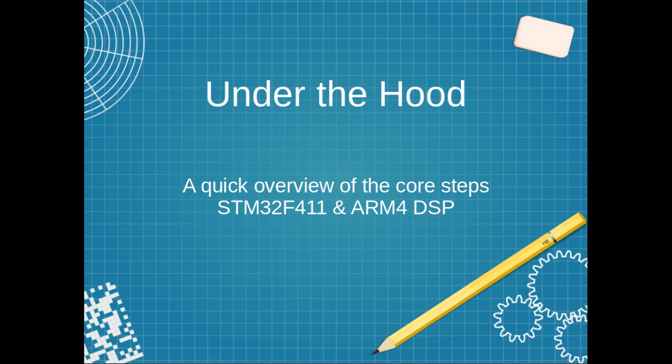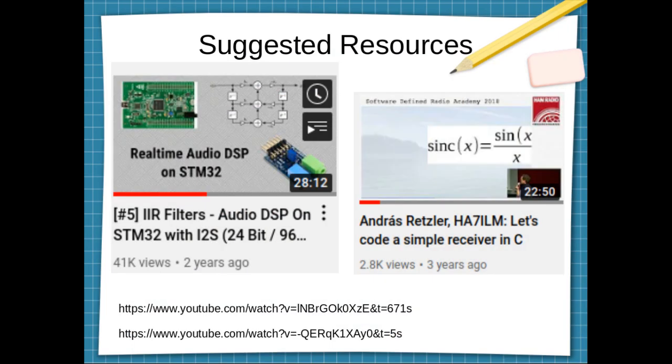There are lots of resources out there that describe DSP theory as it relates to direct conversion SDRs, but finding real examples for hardware like what's in play here can be a bit of a challenge. So I'll try to do a quick overview of what's going on inside the black pill, highlighting the core parts that explain how key features unique to the F411 work. I've included two links below that really helped me and are well worth your time.